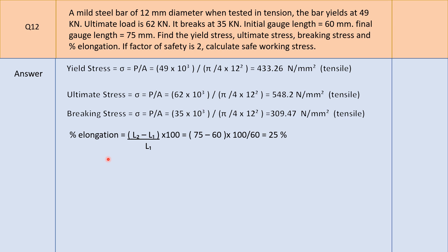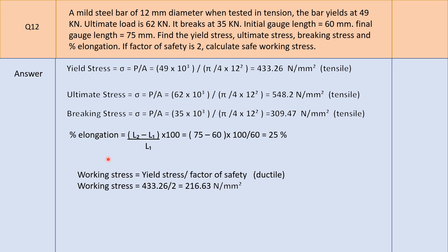For safe working stress, since this is a ductile material, we use: working stress equals yield stress divided by factor of safety. Yield stress is 433.26 and factor of safety is 2, so 433.26 / 2 = 216.67 N/mm². This is how you solve this problem.